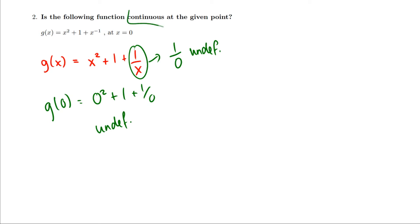So we cannot have g of zero, because that gives us zero squared plus one plus one over zero, which is undefined. Therefore, is the function continuous at x equals zero? No, it's not, because g of zero is not defined.